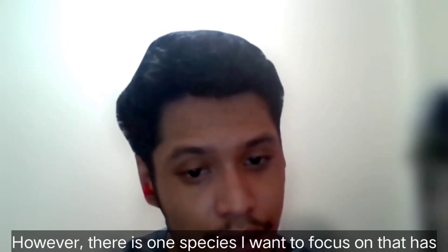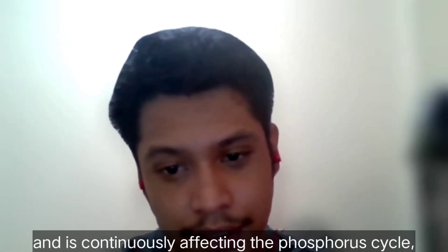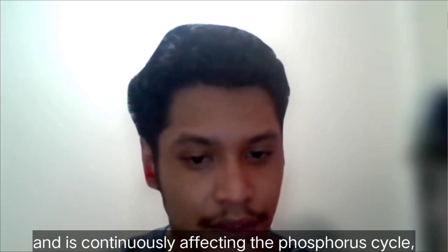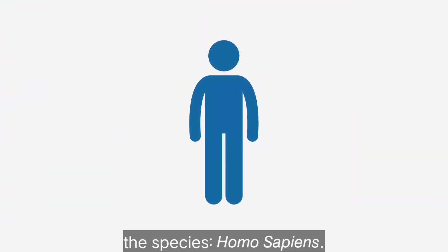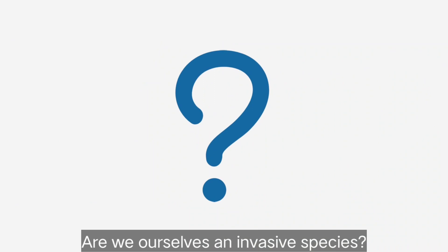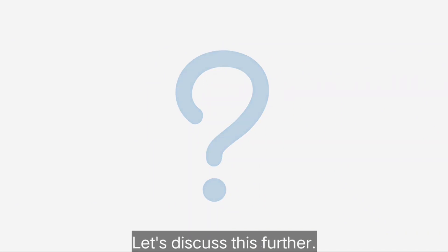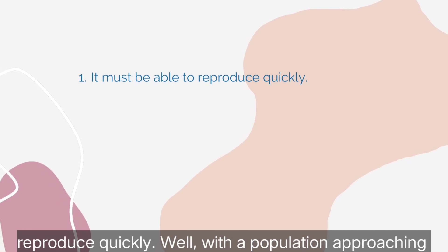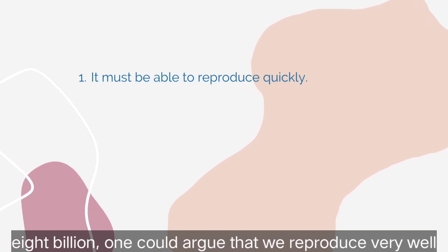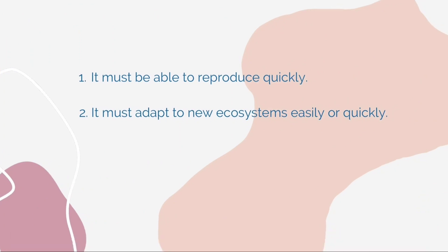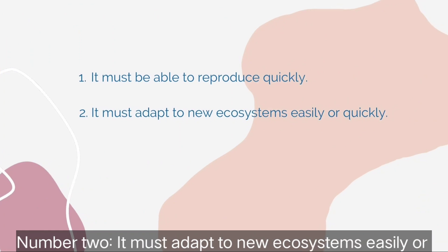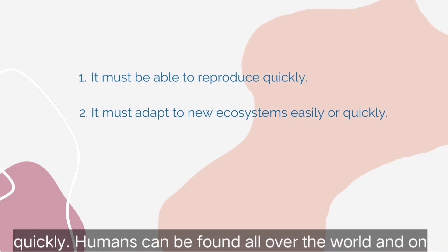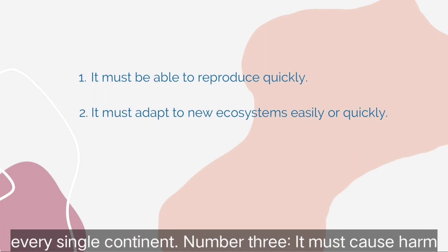However, there is one species I want to focus on that has been and continues to affect the phosphorus cycle — the species Homo sapiens. Are we ourselves an invasive species? For a species to be considered invasive, it must meet a few requirements. Number one: it must be able to reproduce quickly. With a population approaching 8 billion, one could argue that we reproduce very well. Number two: it must adapt to new ecosystems easily — humans can be found on every single continent.